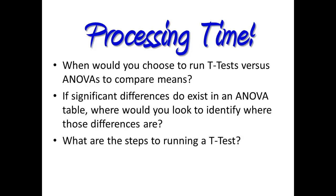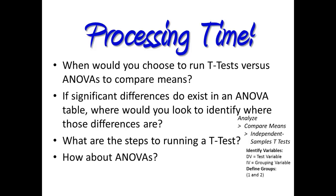What are the steps to running a T-test? That would be analyze, compare means, independent samples T-tests, and then you'd identify the variables and define the groups. And then how about ANOVAs? That would be analyze, compare means, one-way ANOVA, and then you would also need to identify the variables, choose Tukey for post hoc, and then options descriptives.